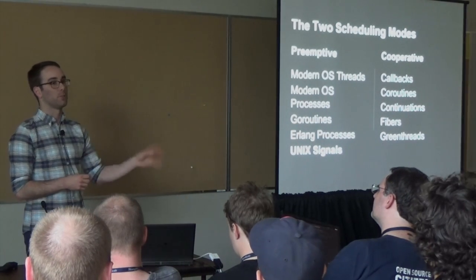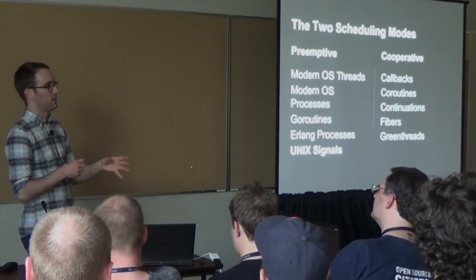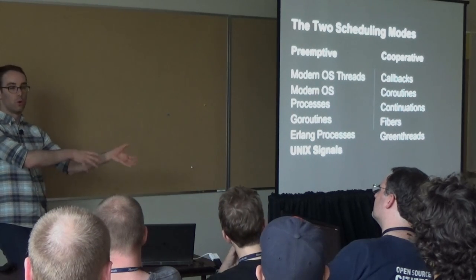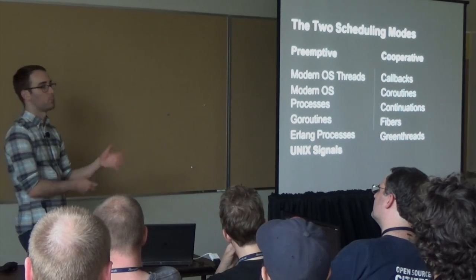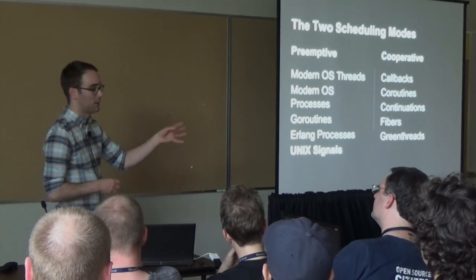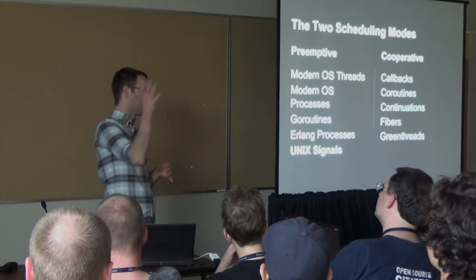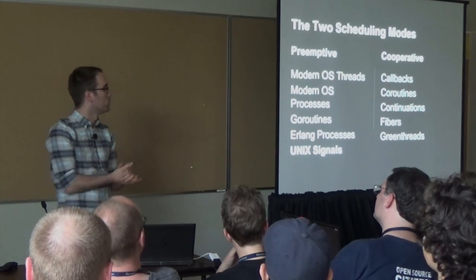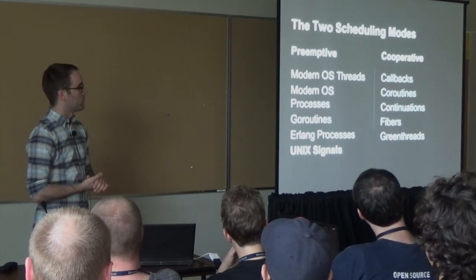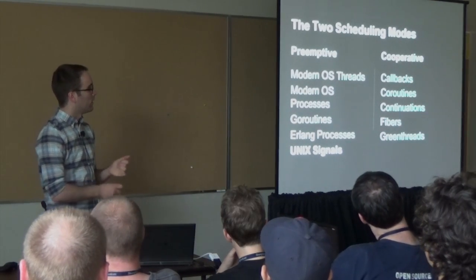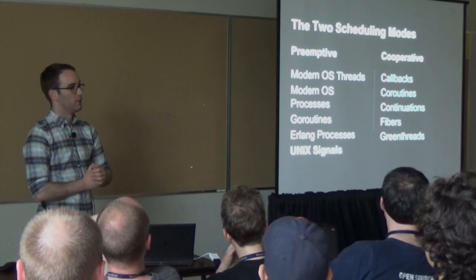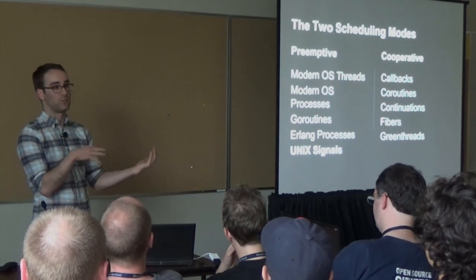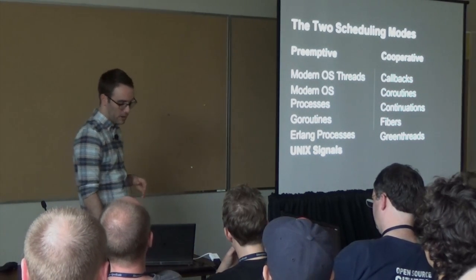Callbacks, coroutines, fibers in Ruby, and green threads in Python are all cooperative. At some point something is explicitly handing control over to something else, whether it's a callback in Node going back to the main event loop, or a fiber in Ruby saying it's safe to switch to a different fiber.